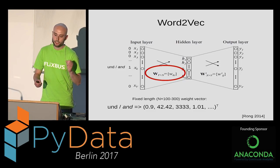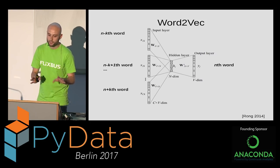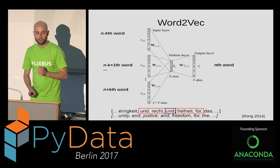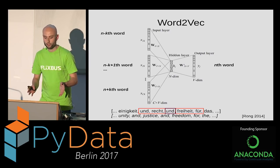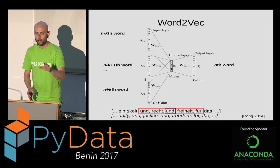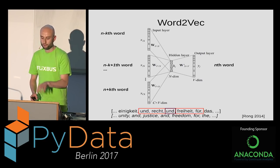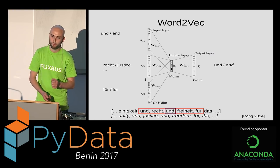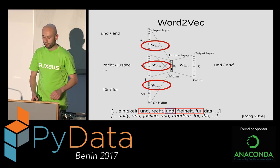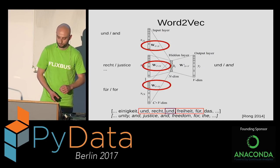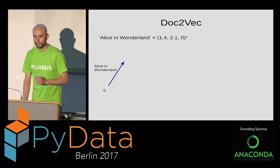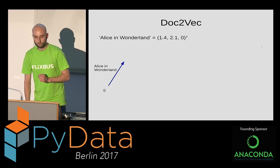That was Word2Vec in a nutshell — a simple version, but the actual thing is similar. In practice you train on a broader context, not just the preceding word. For example, predict the word 'and' given the surrounding context of 'unity,' 'justice,' 'freedom,' and 'for.' You put the context at one end of the network and predict the middle word at the other end. Same principle holds — word vectors are found in the weight matrices. Now let's make the small step from Word2Vec to Doc2Vec.